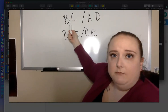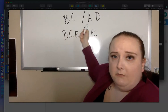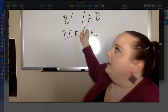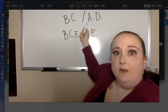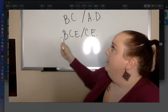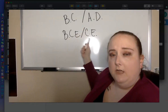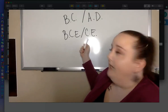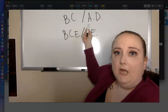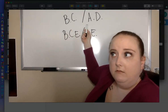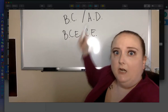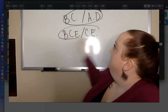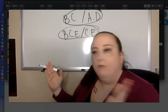BC means Before Christ; AD means Anno Domini, which essentially means 'in the year of our Lord.' Before Common Era and Common Era just takes the religion out of things. If you're used to writing BC and AD, that's okay — the AP readers don't care. Just be consistent and stay with the same ones.